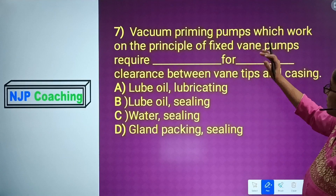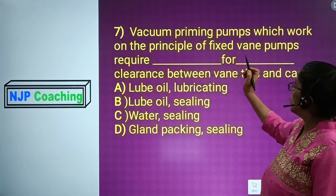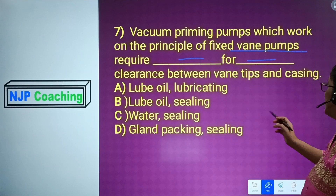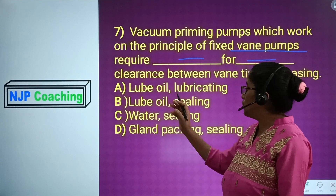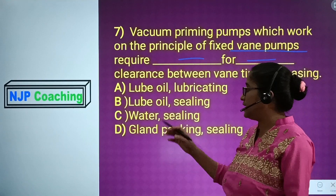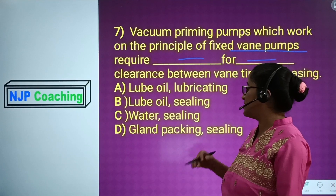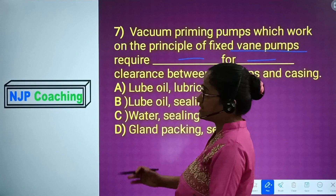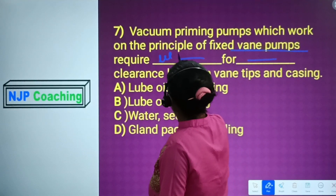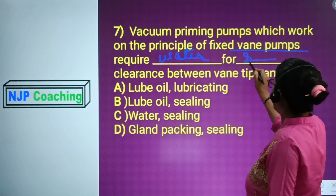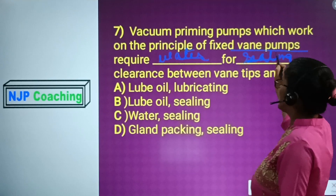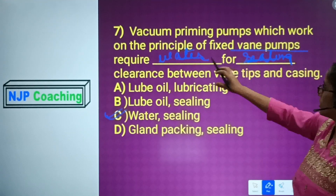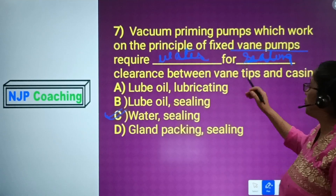Question number 7: A vacuum priming pump works on the principle of a fixed vane pump and requires clearance between the vanes and casing. Options: A) Lube oil lubricant, B) Lube oil sealing, C) Water sealing, D) Gas packing sealing. The correct answer is number C — water sealing.